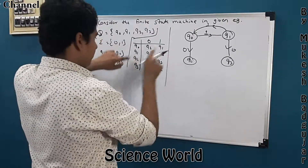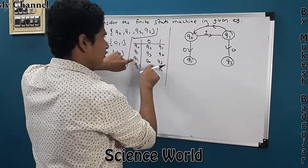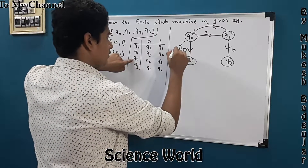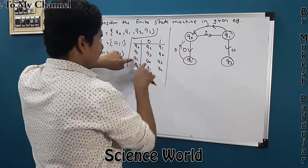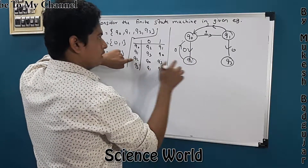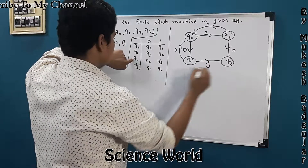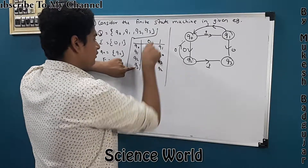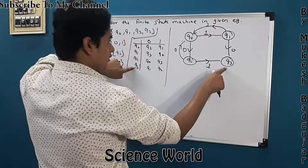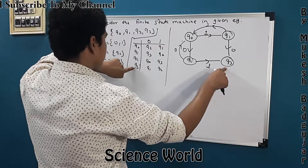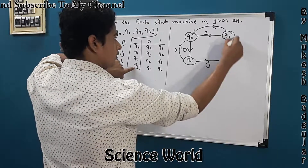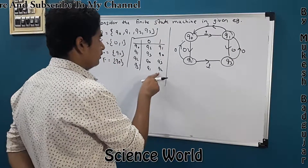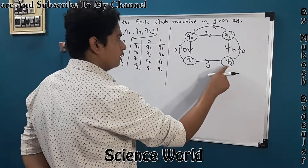Continuing the transitions: Q2 on input 0 goes to Q0. Q2 on input 1 goes to Q3. Q3 on input 0 goes to Q1. Q3 on input 1 goes to Q2. So we draw the diagram from the table — this is the simplest way.